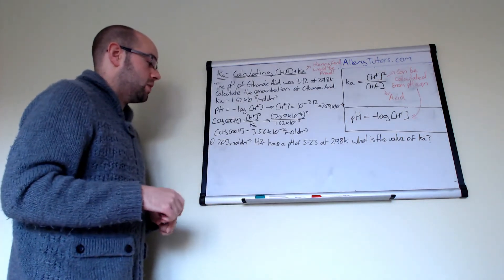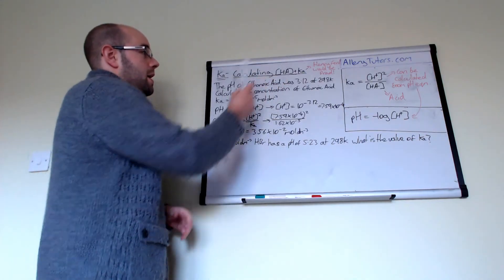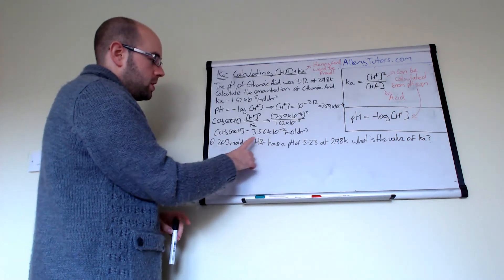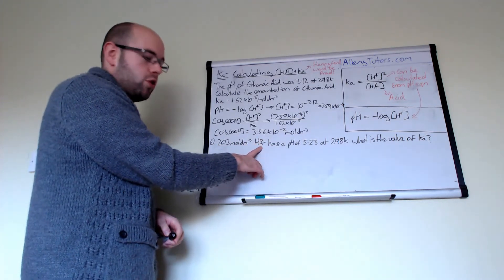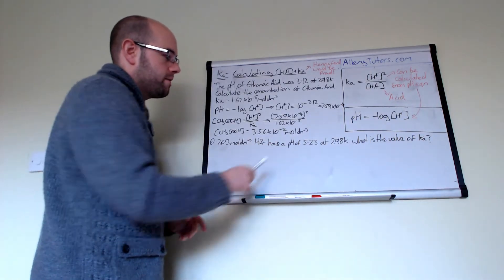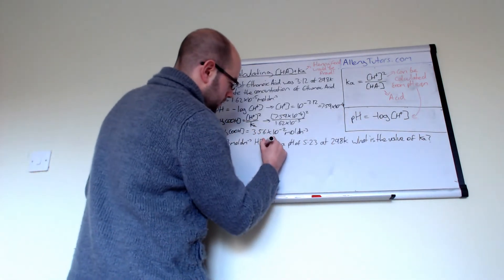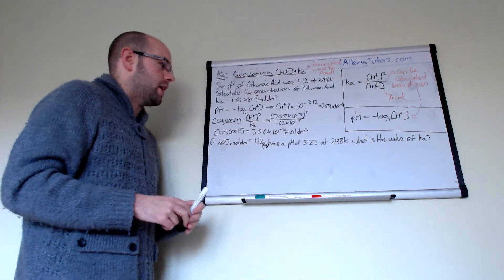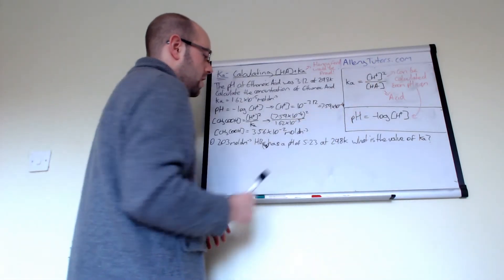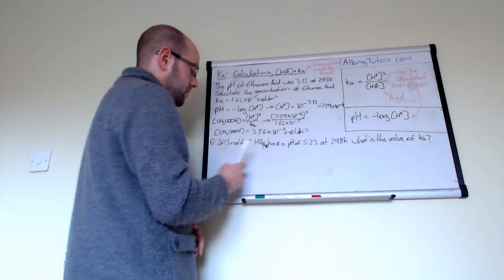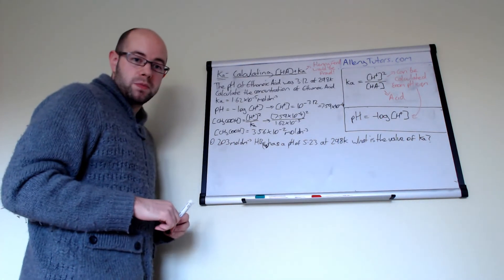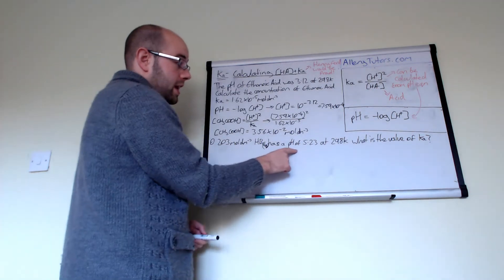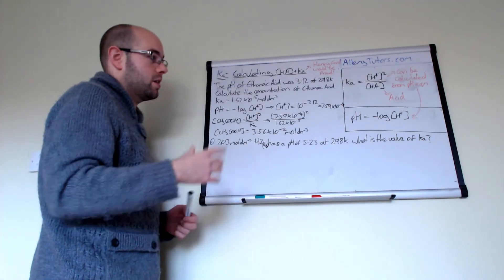A slightly simpler version is this next example, where you have to work out the value of Ka. We have 0.203 moles per dm³ of HBr — hydrobromic acid — with a pH of 5.23 at 298 Kelvin. What is the value of Ka? We need to work out H⁺ and HA. We know the concentration of our weak acid — it's 0.203 moles per dm³ — but we don't know H⁺.